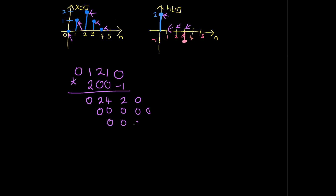The next rows of zeros multiply out to all zeros as well. Then for the negative one row: negative one times one gives you negative one, and negative one times zero gives you zero.